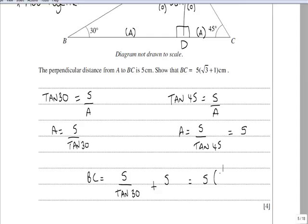5 brackets 1 over tan 30 plus 1. And for those of you with a pretty snazzy scientific calculator, the calculator will show that 1 over tan 30 is in fact root 3, hence the required distance.